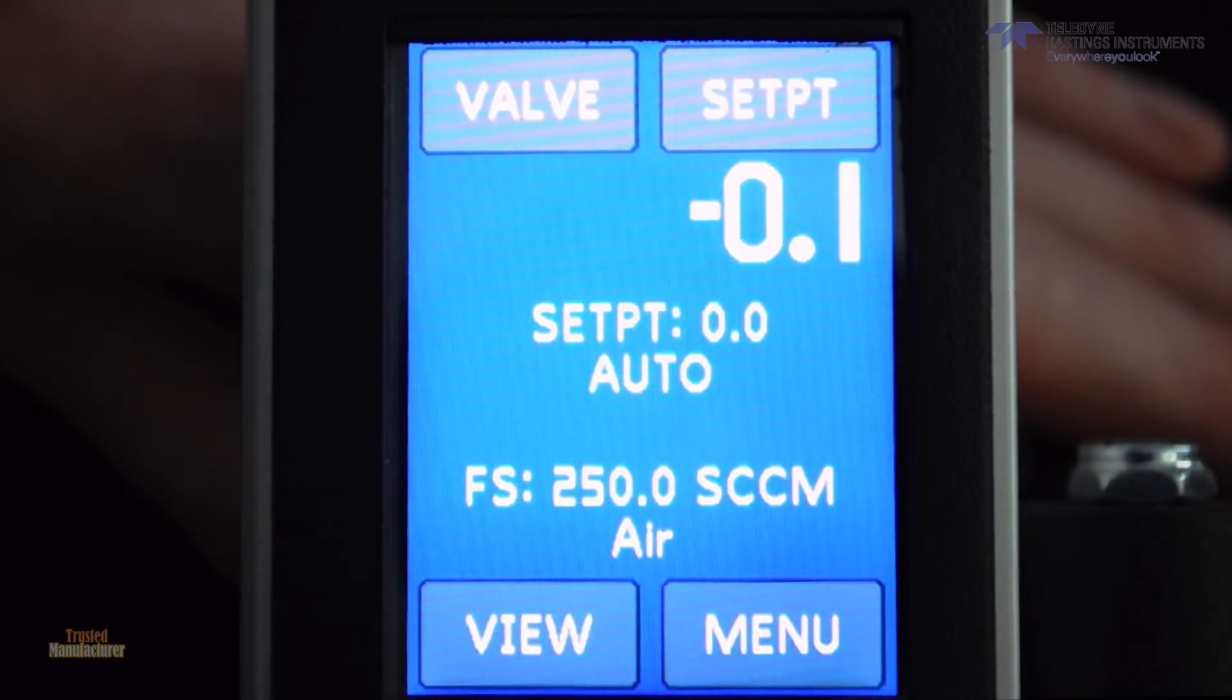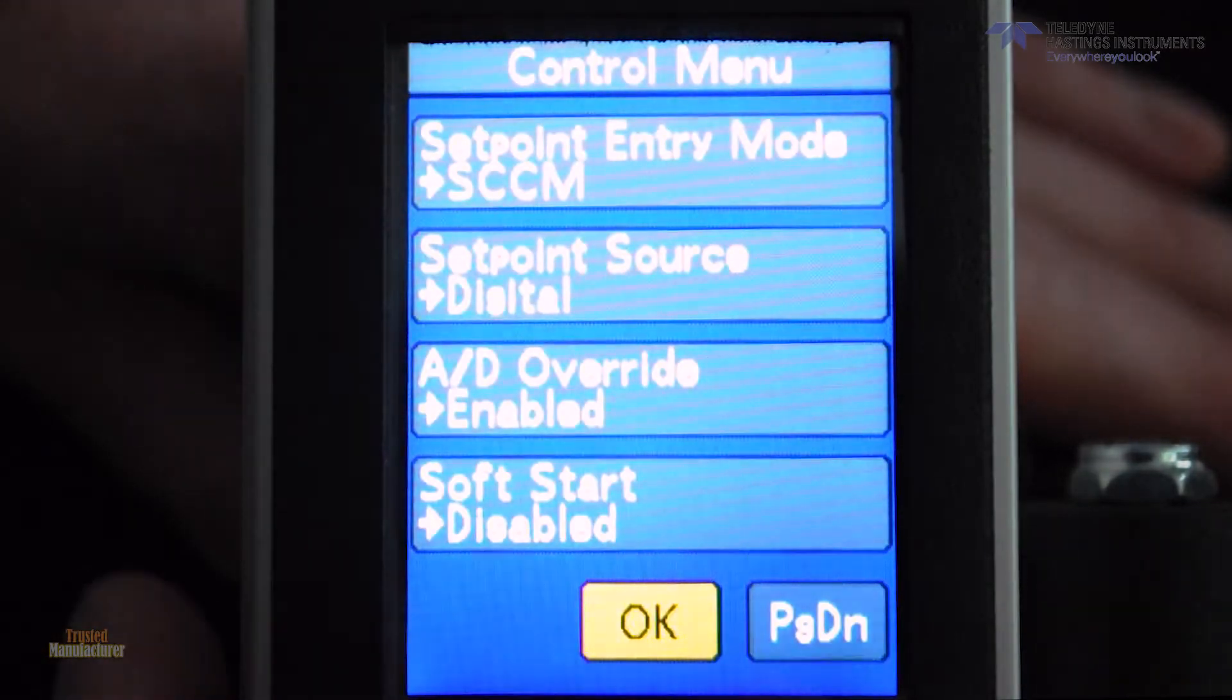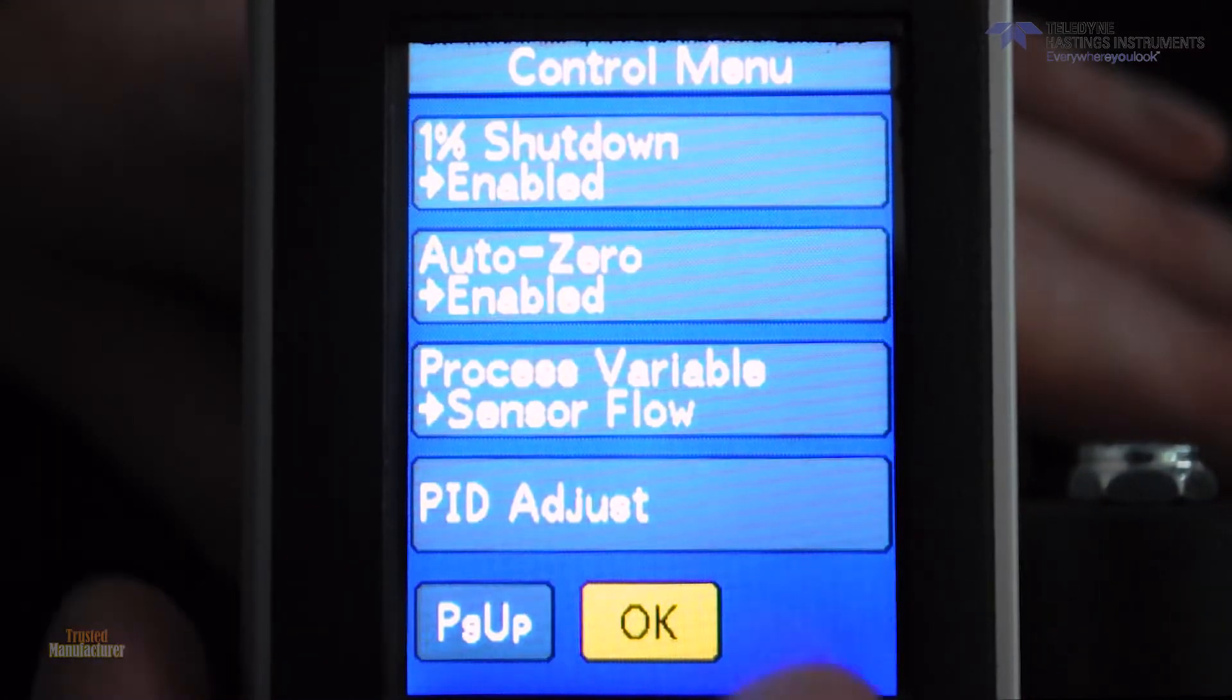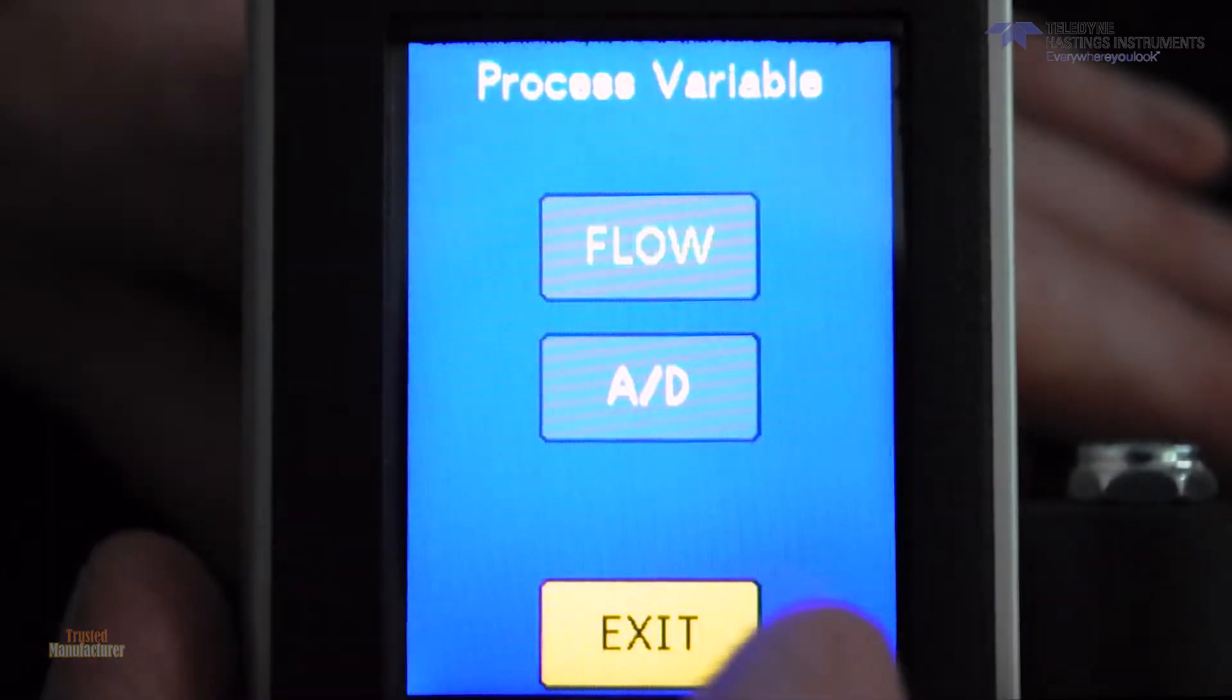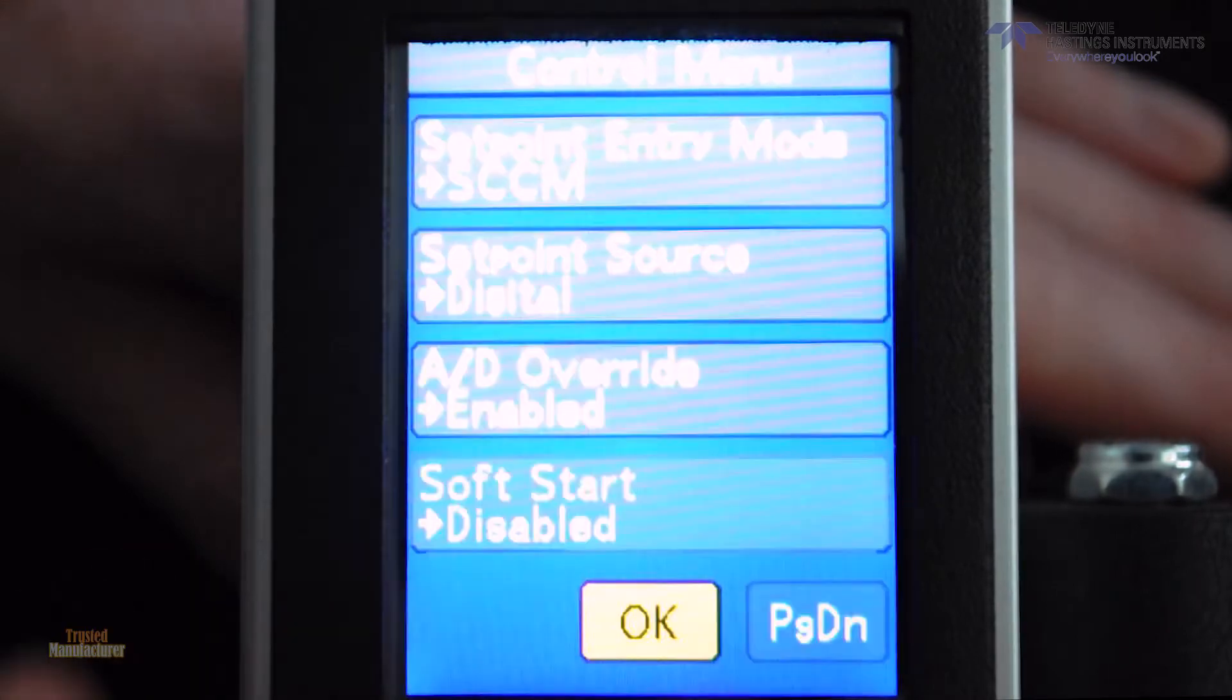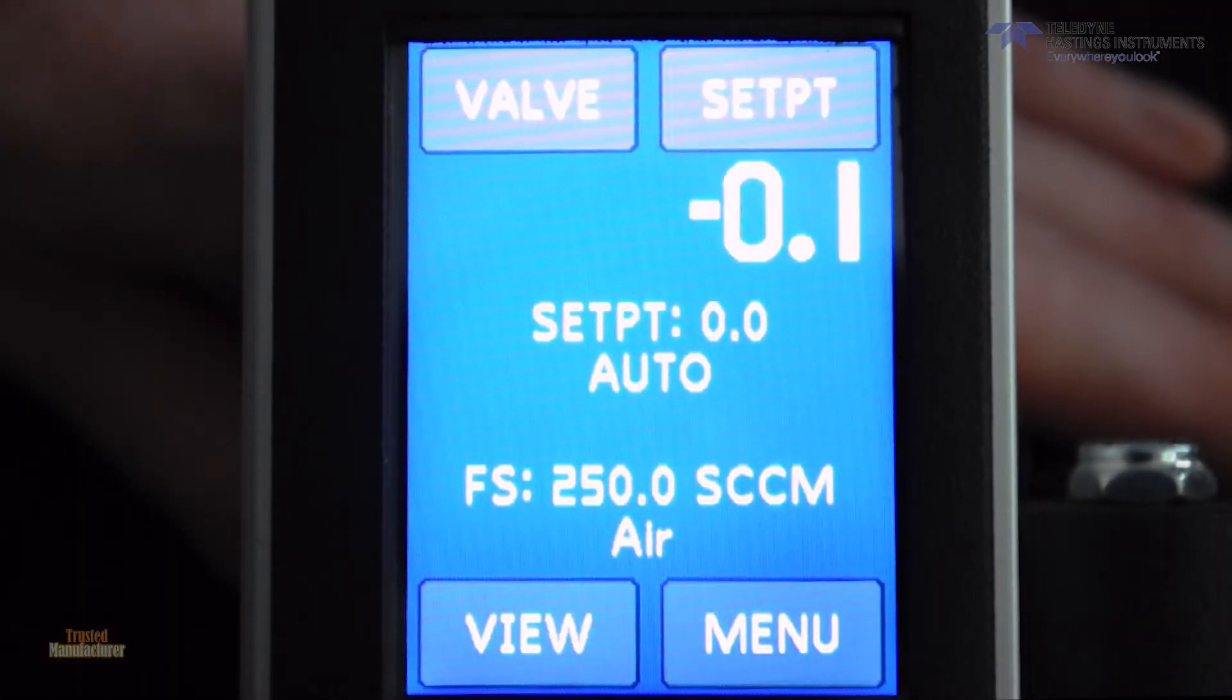To do this, I'm going to go to menu and then flow control. I'm going to go page down and change the process variable from the flow sensor to that A to D, which is connected to pin one on the D connector, which we showed earlier.